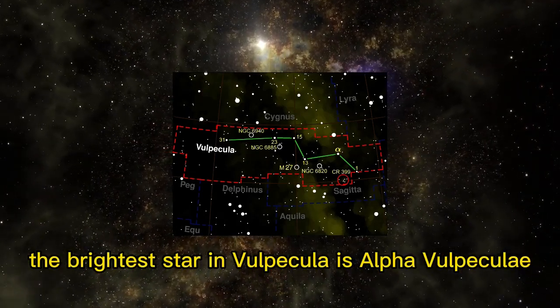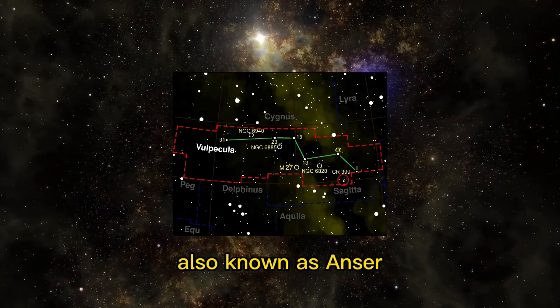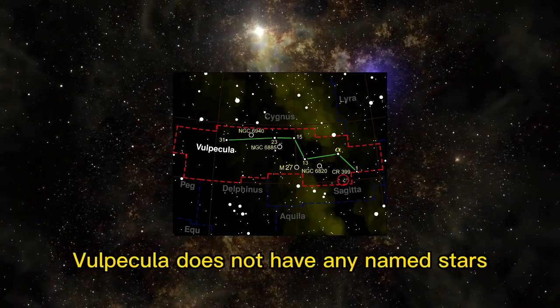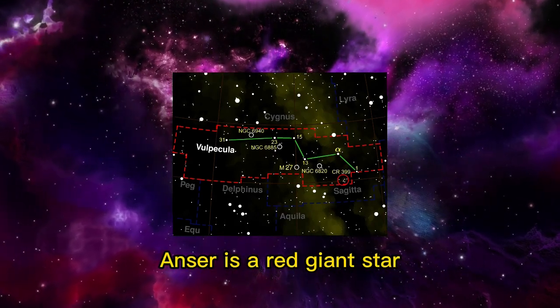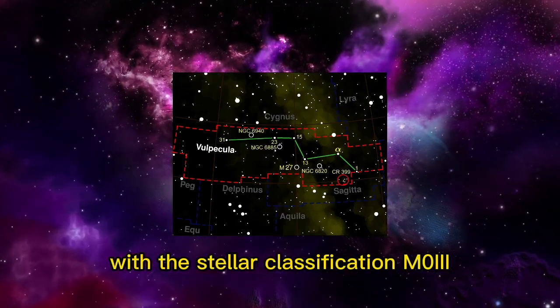The brightest star in Vulpecula is Alpha Vulpeculae, also known as Anser. Vulpecula does not have any named stars other than Anser. Anser is a red giant star with the stellar classification M0 III.